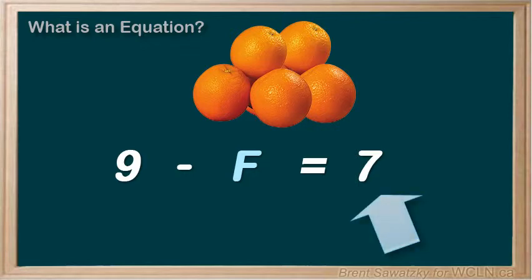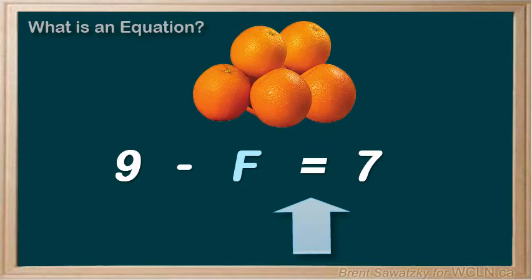And it's an equation. It has an equal sign in it. To ensure that the left side is equal to the right side, 9 minus what gives us 7?